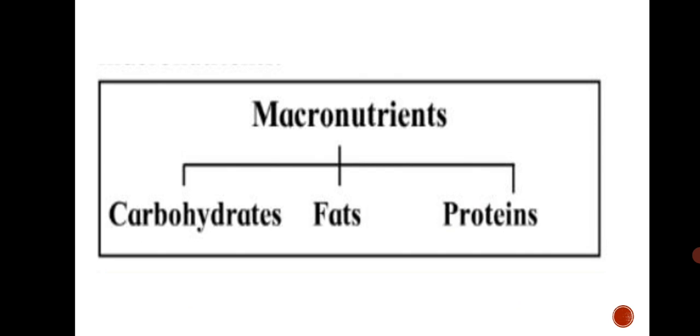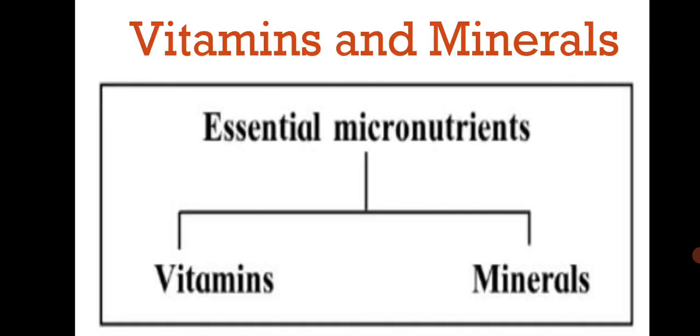Now, let's study about vitamins and minerals. Essential micronutrients are vitamins and minerals. We learned about macronutrients which are carbohydrates, fats and proteins. Now, we shall learn about micronutrients, vitamins and minerals. In addition to the macronutrients, we need certain food constituents in very small quantities. These micronutrients are vitamins and minerals.